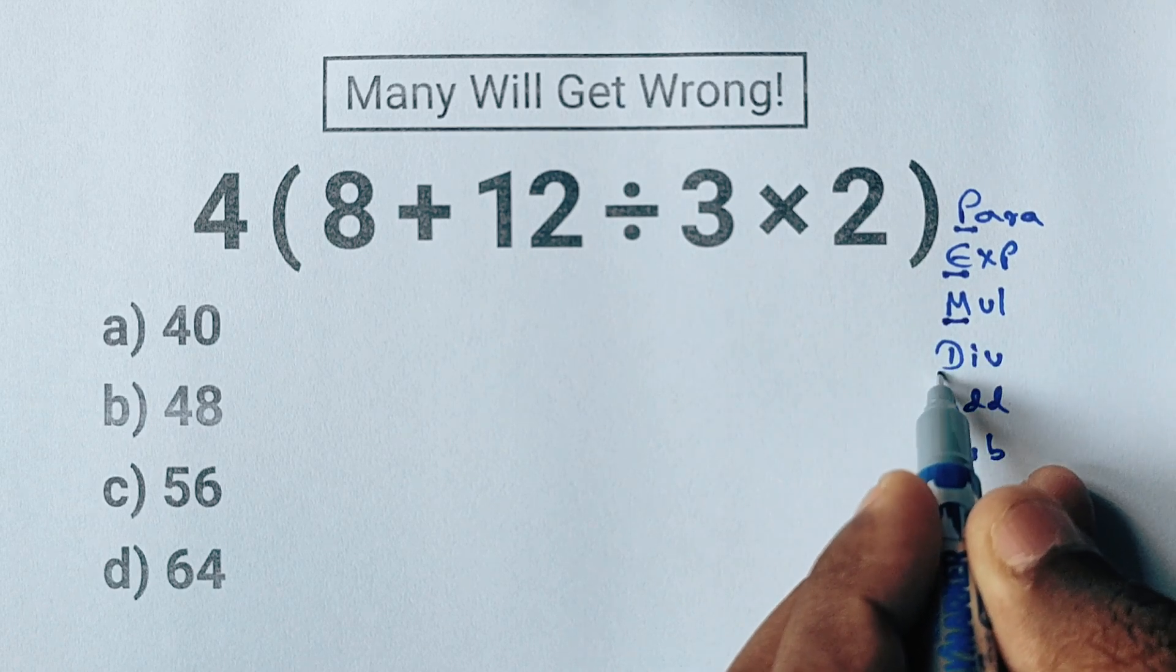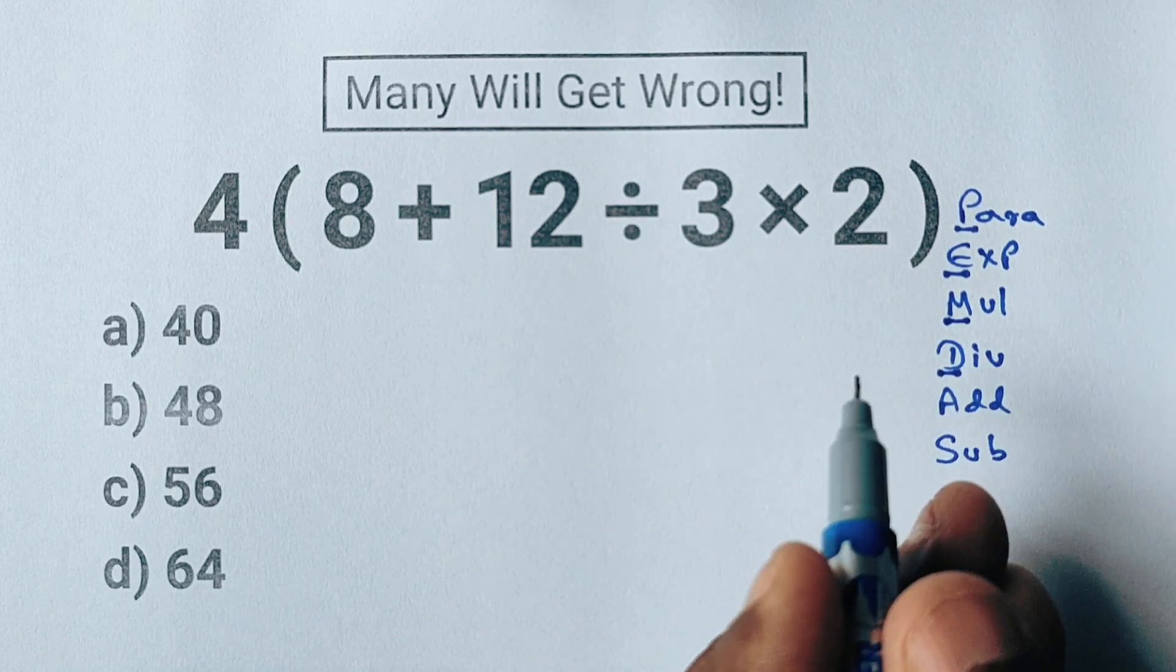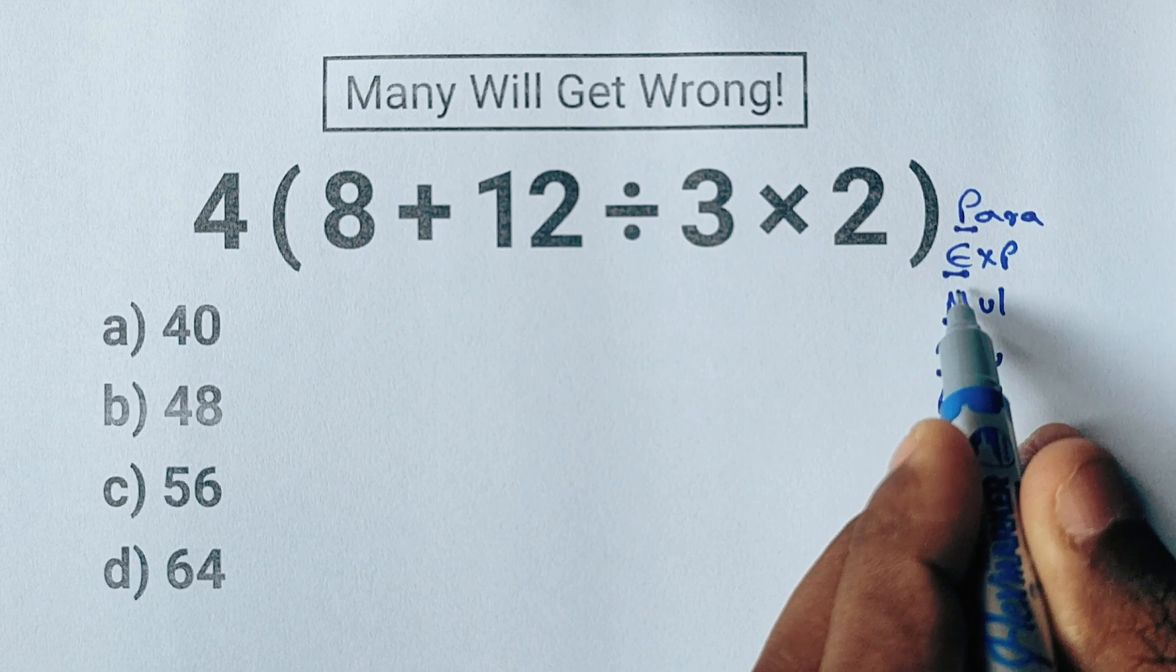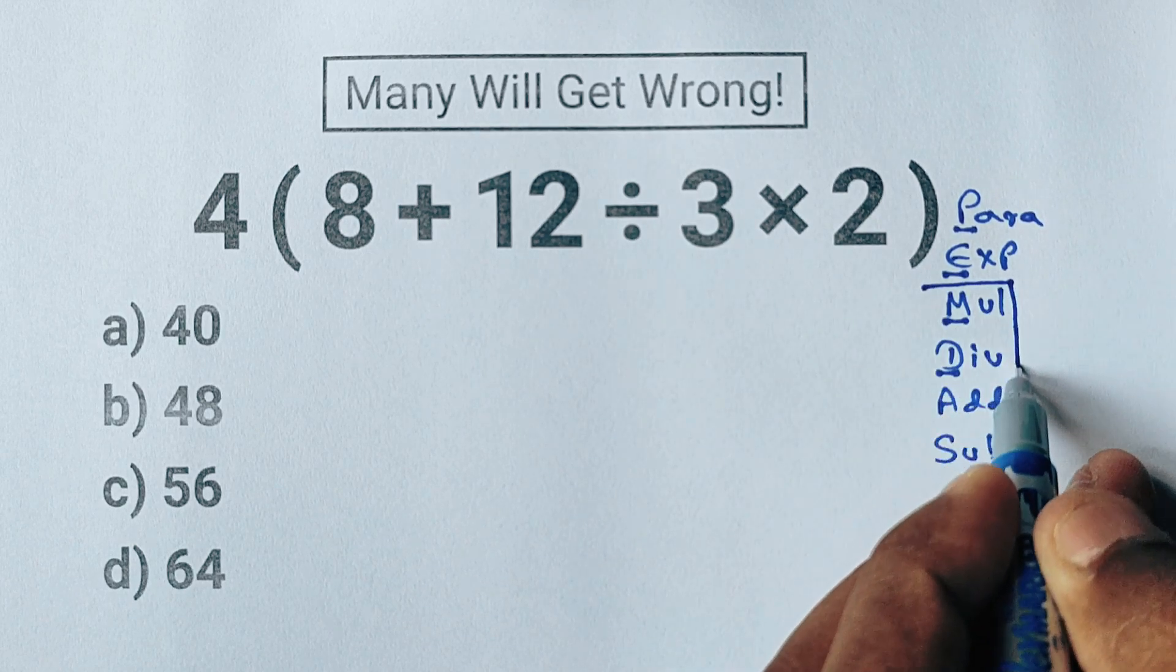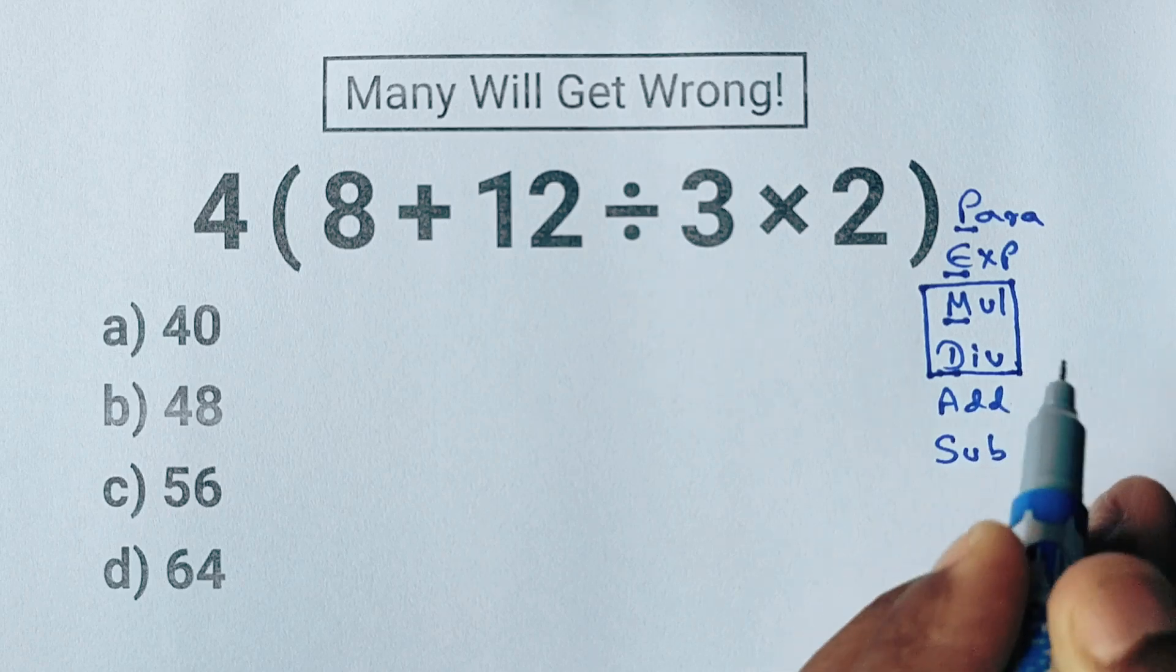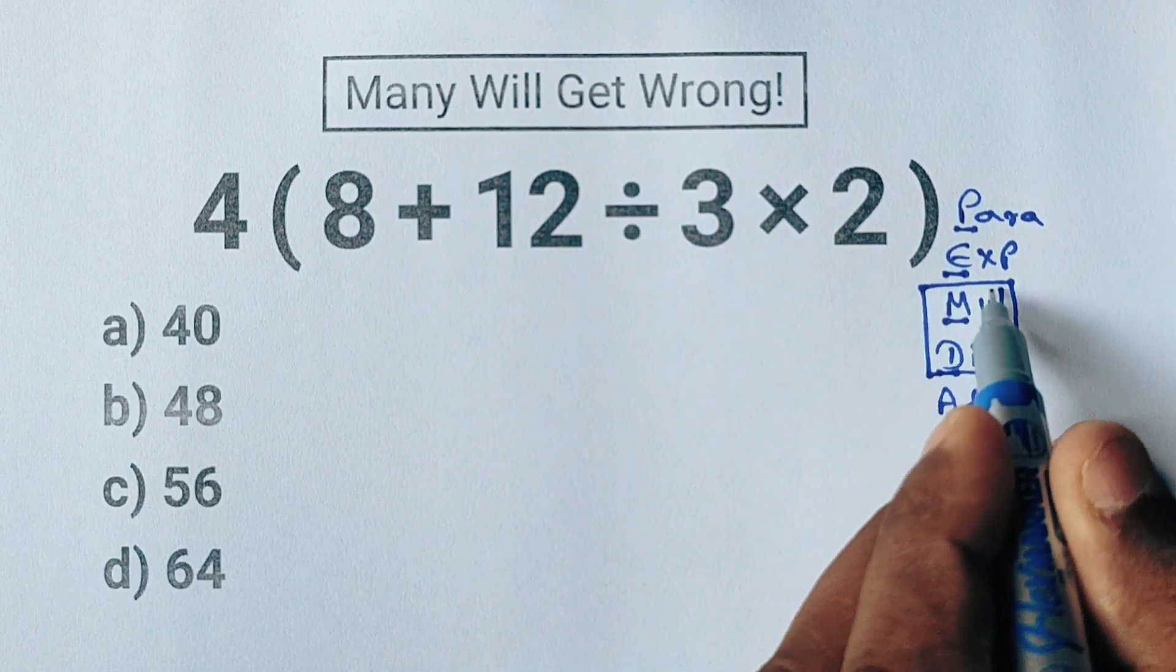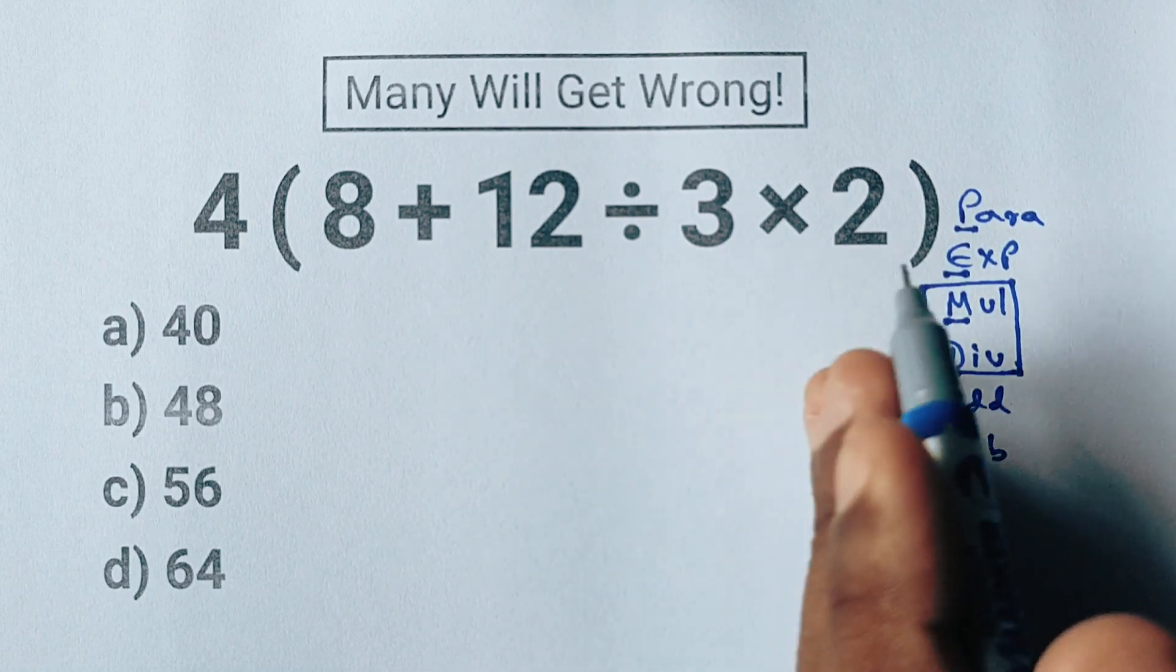Next comes the tricky part: multiplication and division. Here's an important tip—even though PEMDAS lists multiplication before division, they actually share the same priority. That means we don't do all the multiplication first; we go from left to right, solving each multiplication or division step in the order it appears.